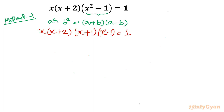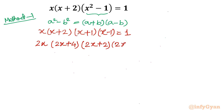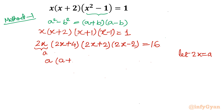Now I will multiply each term by 2. So I will write 2x, then the bracket becomes (2x plus 4), multiplied by 2 gives (2x plus 2), and multiplied by 2 gives (2x minus 2). We multiplied four 2s, so the right-hand side becomes 16 to keep it balanced. Now we put 2x equal to a, so let 2x equal to a. The equation becomes a times (a plus 4) times (a plus 2) times (a minus 2) equal to 16.